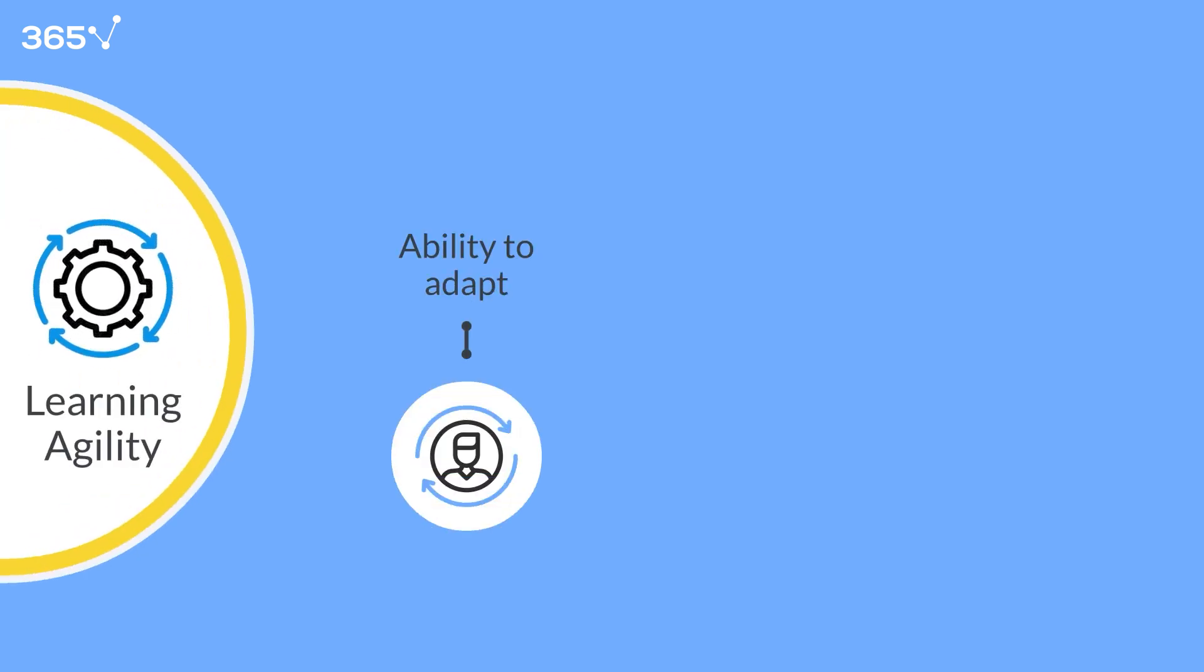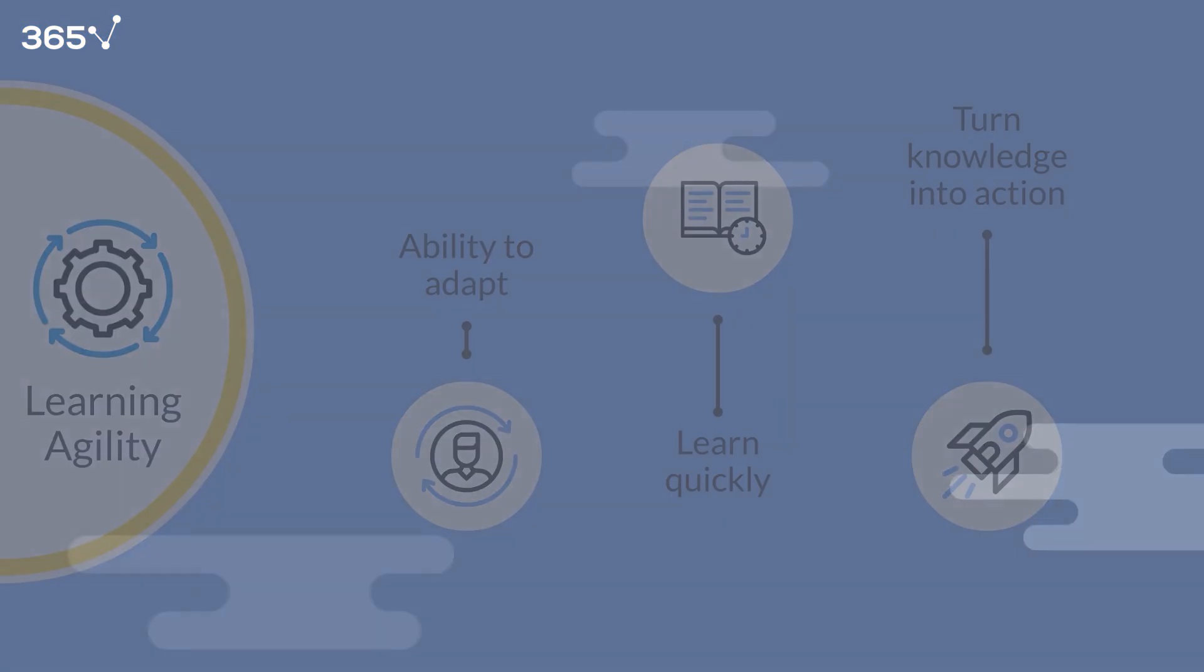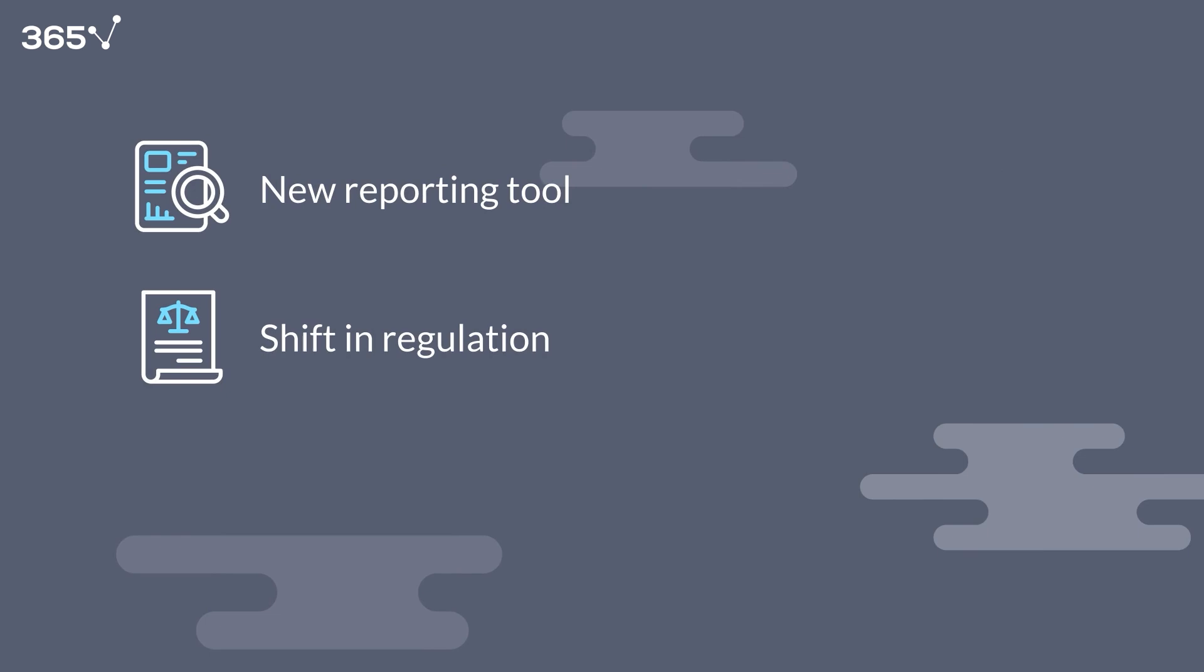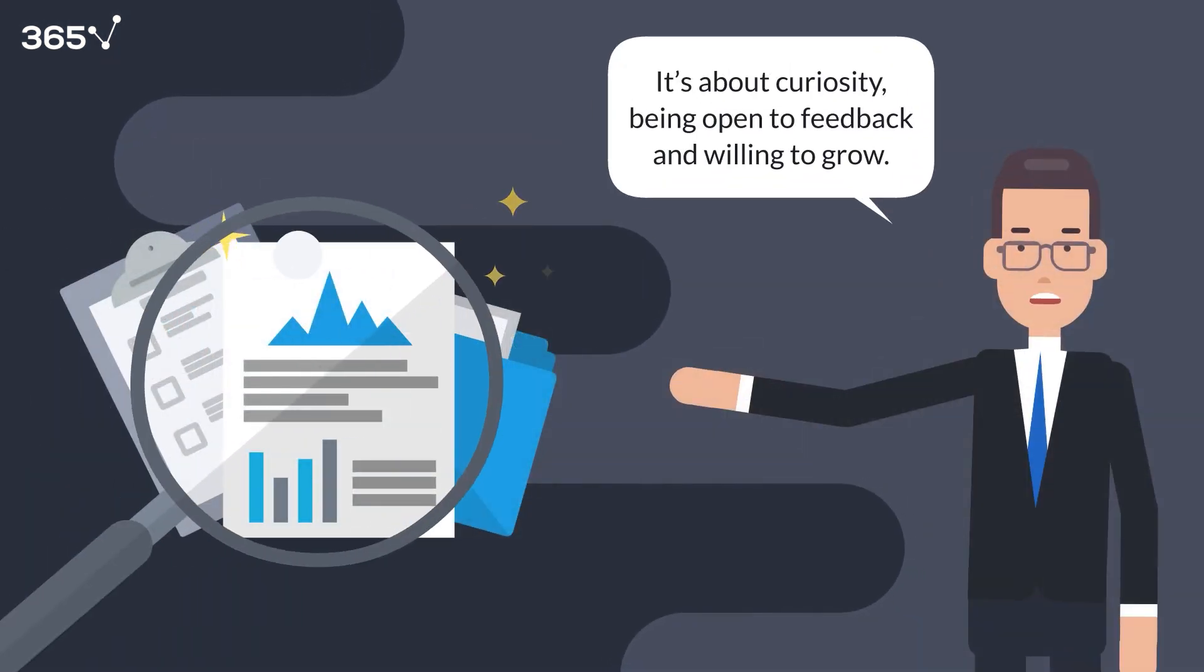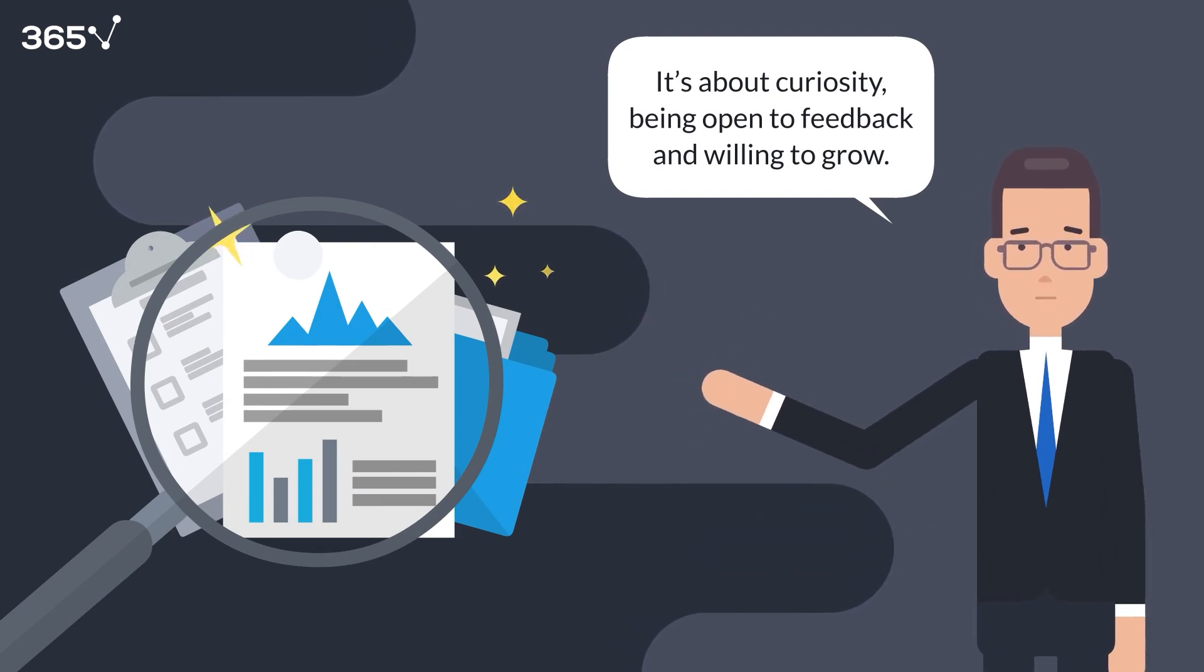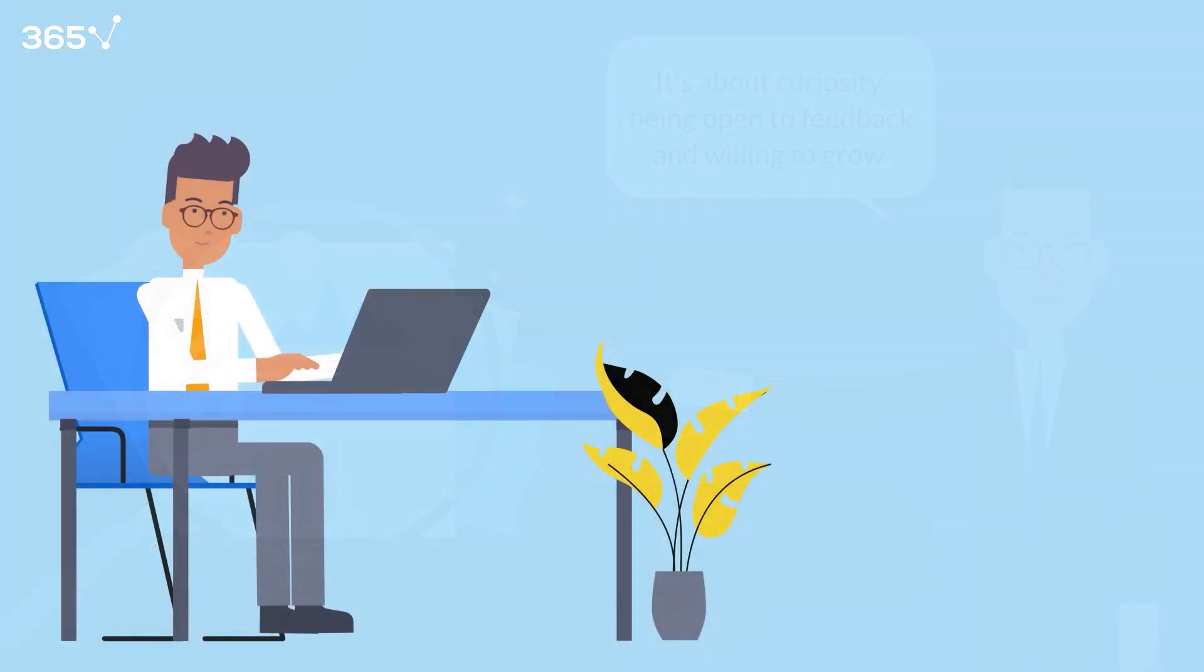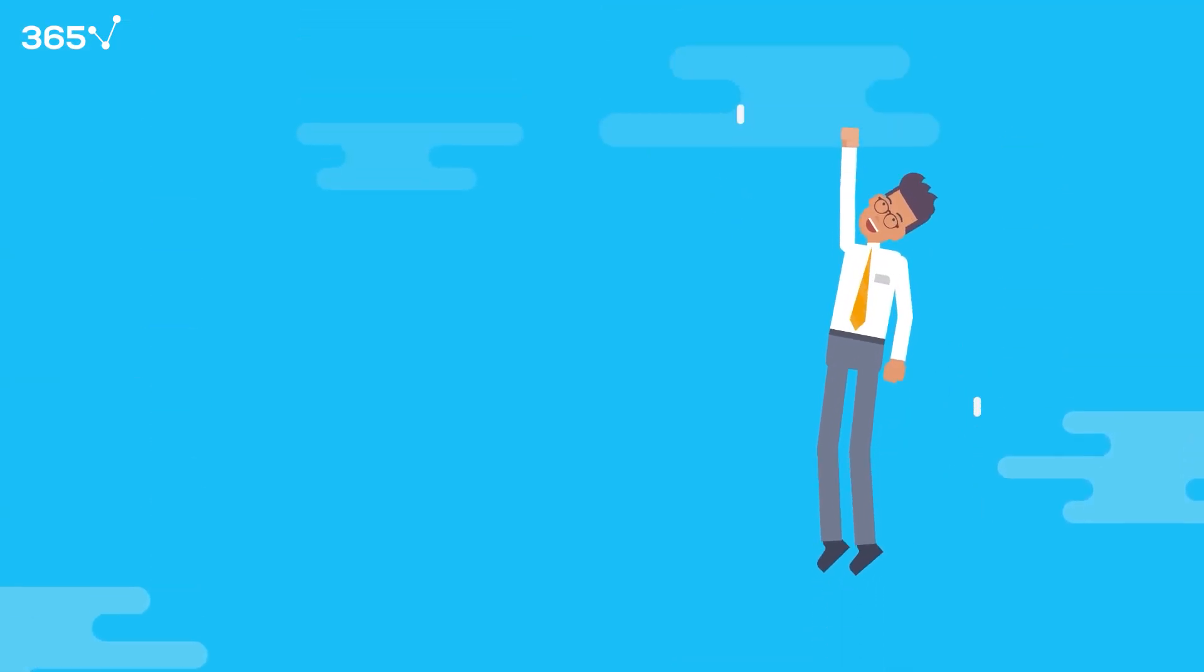Your capacity to adapt, absorb new information, and quickly put new skills into action. Whether it's a new reporting tool, a shift in regulation, or a company-wide pivot, agile finance professionals don't freeze. They quickly learn, adjust, and keep moving forward. It's not about perfection. It's about curiosity, being open to feedback, a willingness to grow, and being comfortable saying 'I don't know yet, but I'll find out.' And that mindset is powerful because every technical skill—Python, SQL, dashboards, AI tools—is all learnable. But the real superpower is being the kind of person who keeps learning.